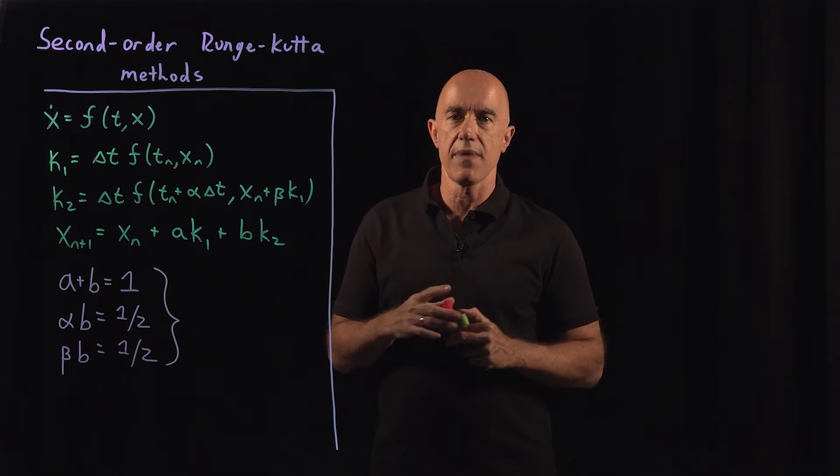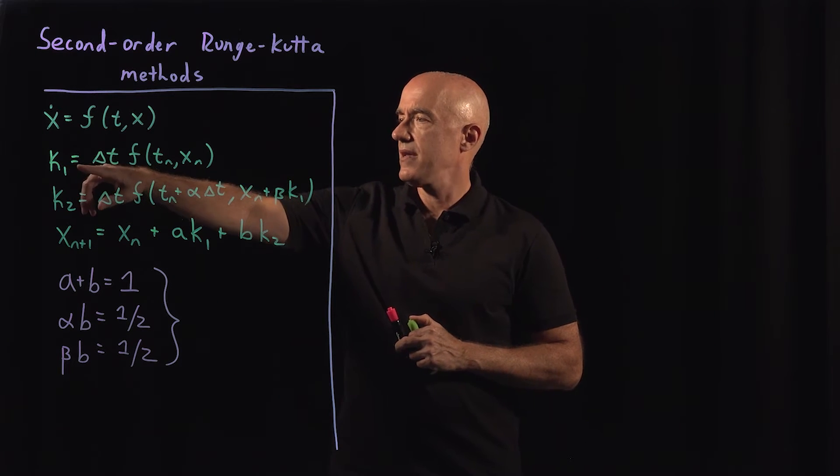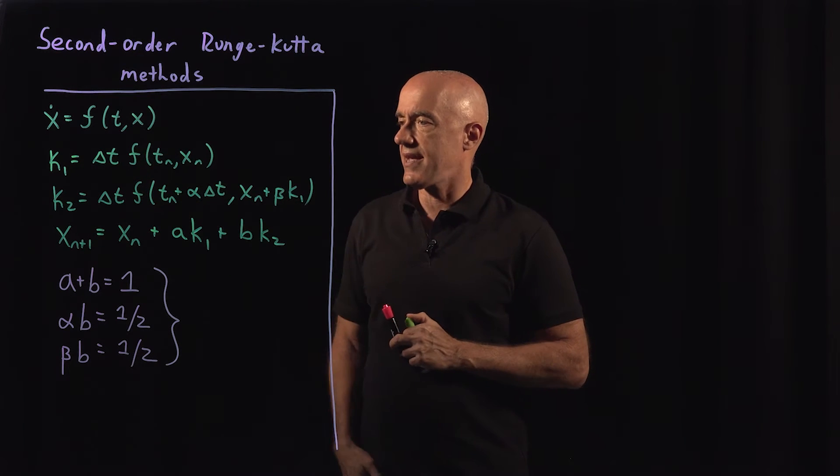The second order Runge-Kutta method is a two-stage method. We compute k1 equals delta t f of (t_n, x_n).